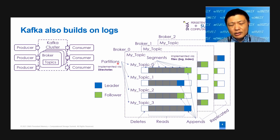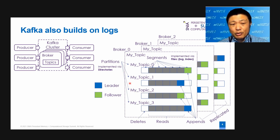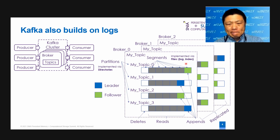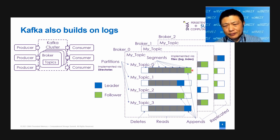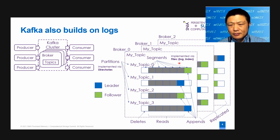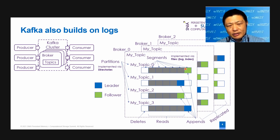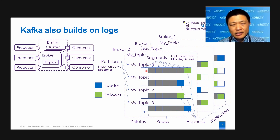The topic is also partitioned into partitions. For example, here we have my-topic-0, my-topic-1, and my-topic-2. Those partitions are normally implemented using directories. For each partition, Kafka will only append at the end — so essentially this is a log. This partition is also organized into segments implemented using files, so each segment is essentially a log plus index file. Kafka will only append at the end of the last or latest segment file. Once the old segment is no longer needed, it will be deleted — it's called a truncate.